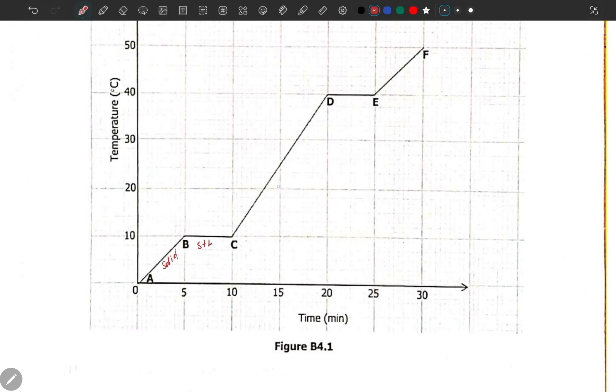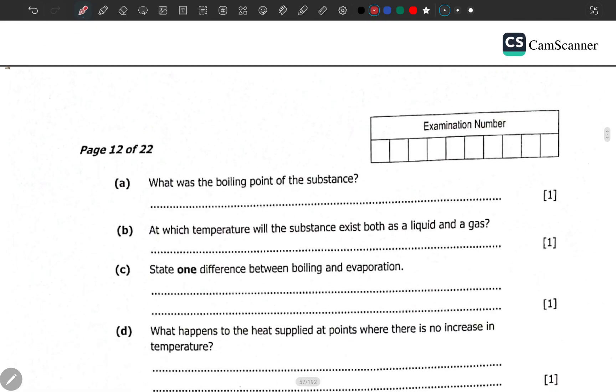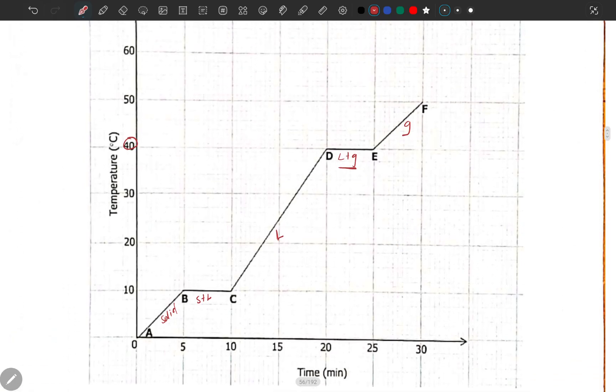Question one says what was the boiling point of the substance? Now the boiling point is a temperature at which a substance changes its state from liquid to gas. We are looking at a level where it is changing from liquid to gas here. So go to the temperature there, 40 degrees Celsius. At which temperature will the substance exist as both liquid and gas? Again, it's the same temperature here, liquid and gas, 40.